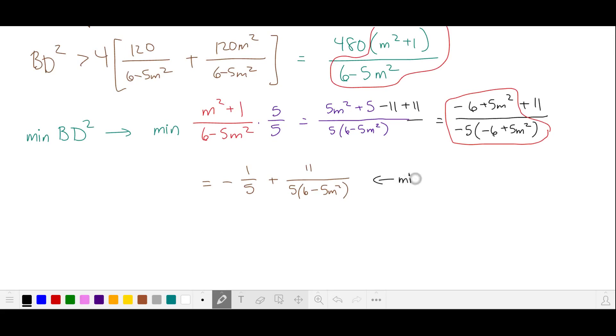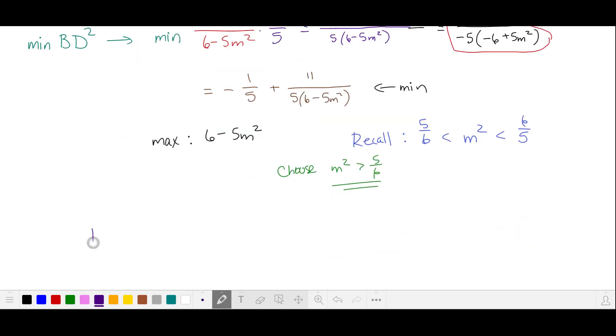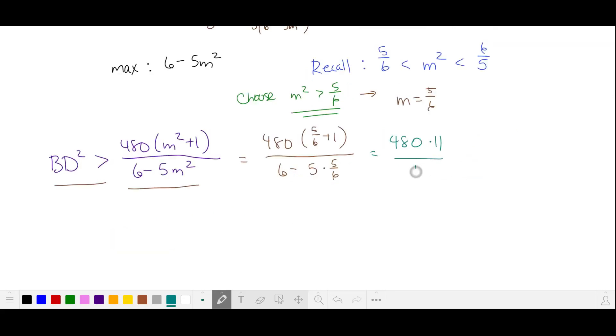Since we want to minimize this expression, we're going to maximize this part of the denominator. And recall that we had an upper and lower bound on m squared. So we'll choose an m squared that's just bigger than 5 sixths. Let's go back to our expression for the square of BD in terms of m squared. Since BD squared is strictly greater than this expression, we'll choose m equals 5 sixths, and we'll substitute. Simplifying, our answer is 480.